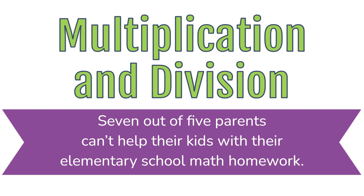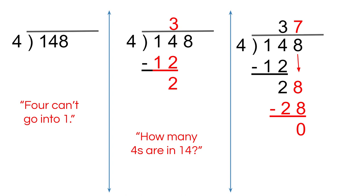Seven out of five parents can't help their kids with their elementary school math homework. The way I learned to divide — if I was doing 148 divided by 4 — you start with the one and say four can't go into one. How many fours are in 14? Three. Write the three at the top, three times four is 12, 14 minus 12 is two. Then bring down the eight: how many fours in 28? Seven. Seven times four is 28, 28 minus 28 is zero. So 148 divided by 4 is 37. This way certainly still works.